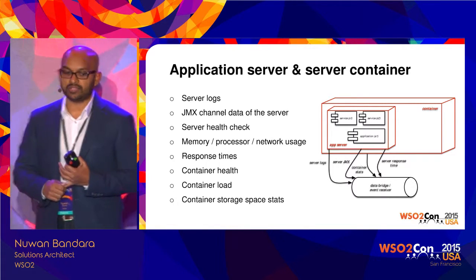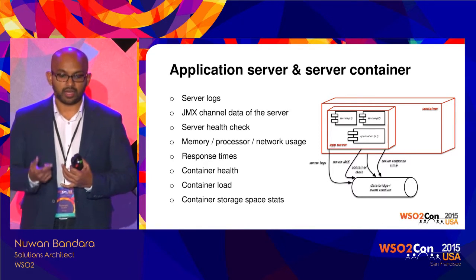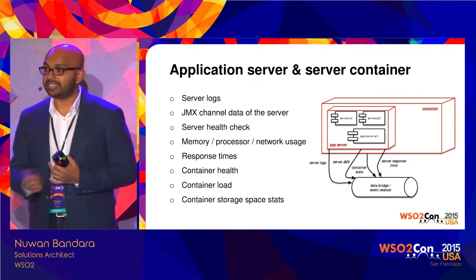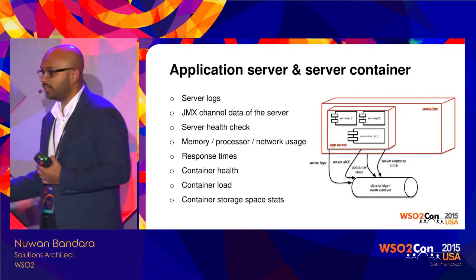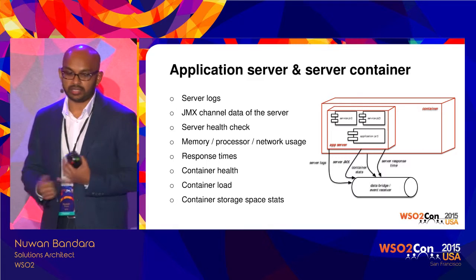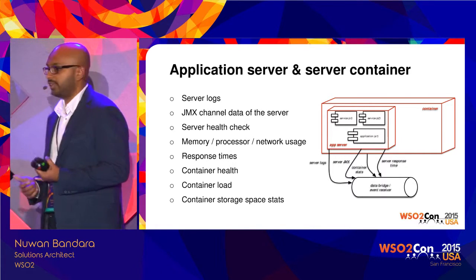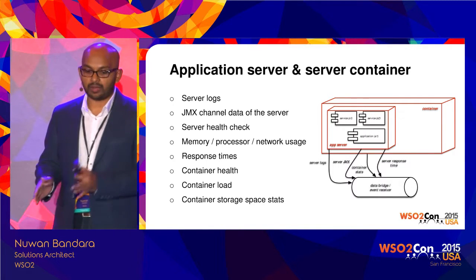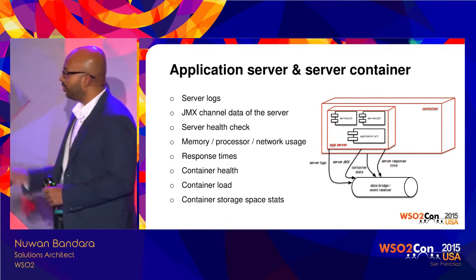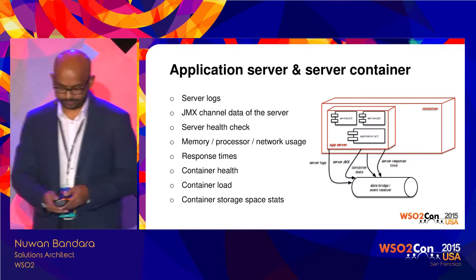From the APIs of the server you can get memory information, process information, network usage, response times of deployed services, application container health — whether it's a Docker image or VM, you can know the memory usage of that machine, container load, container storage space. All that information can be pushed into something like a data bridge or event receiver — just imagine it as a queue you push all that data into.